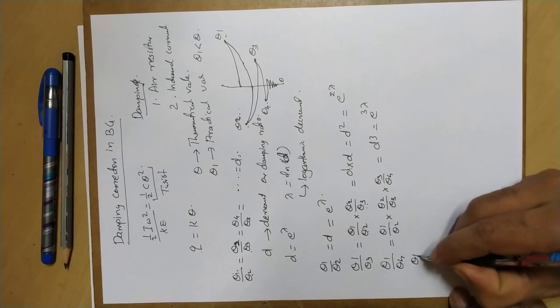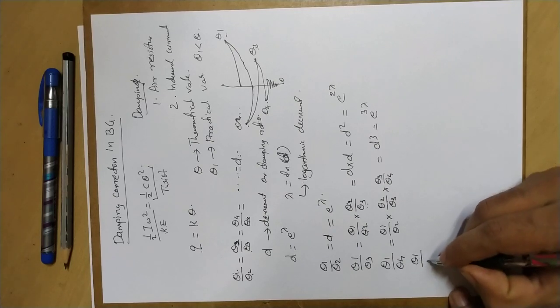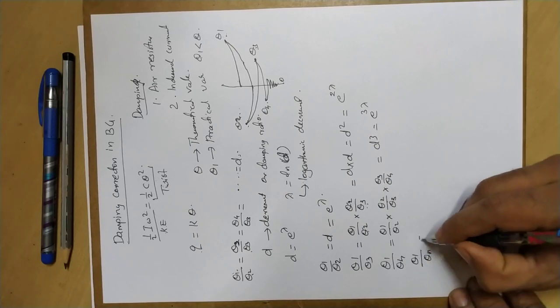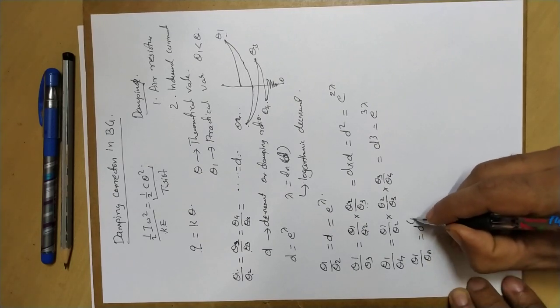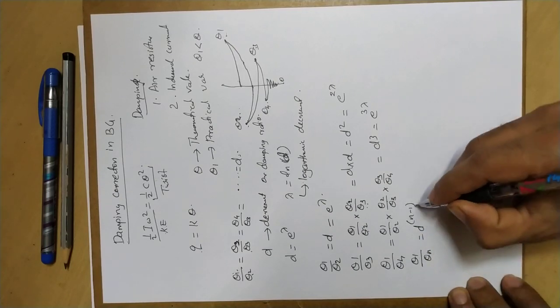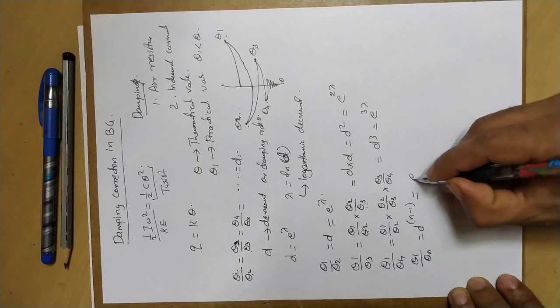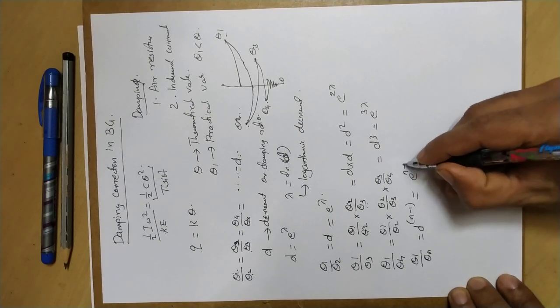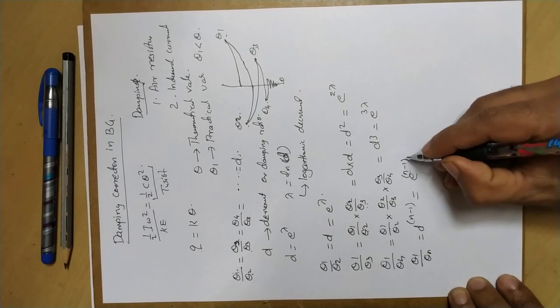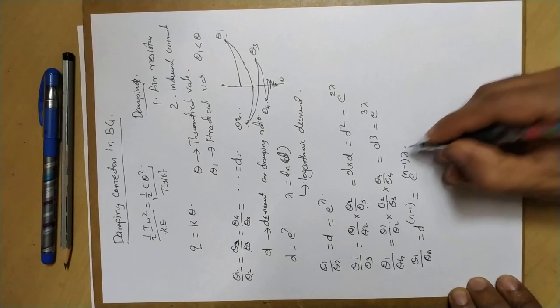In general, theta1 by theta_N is equal to D raised to the power n minus 1, which equals e raised to (n minus 1) times lambda.